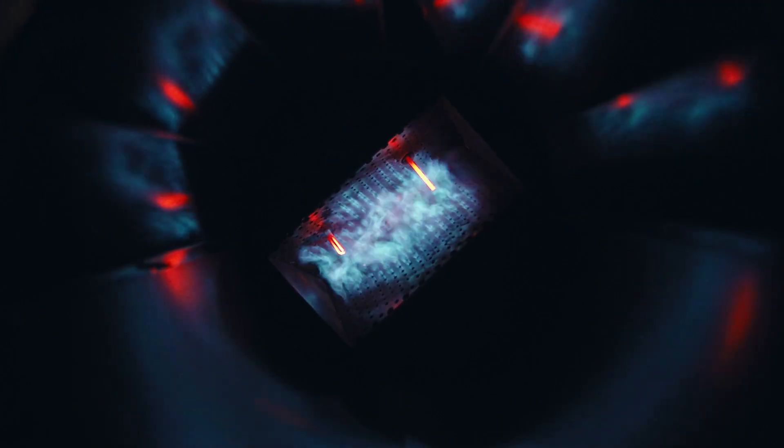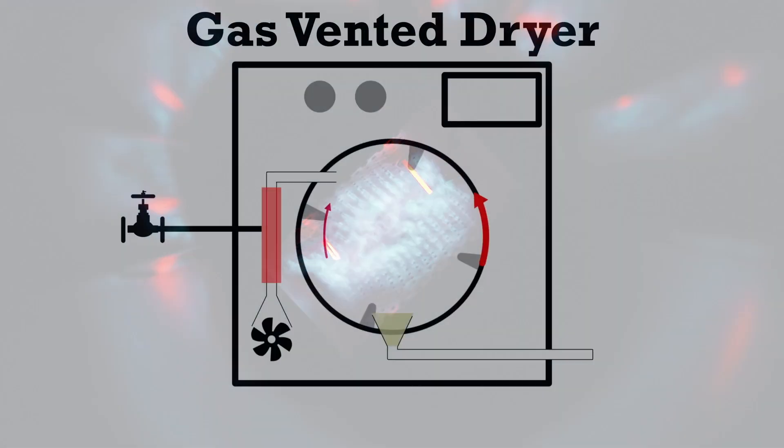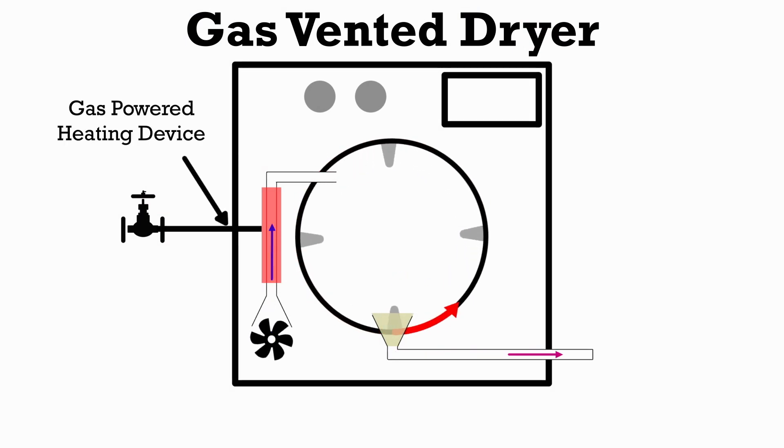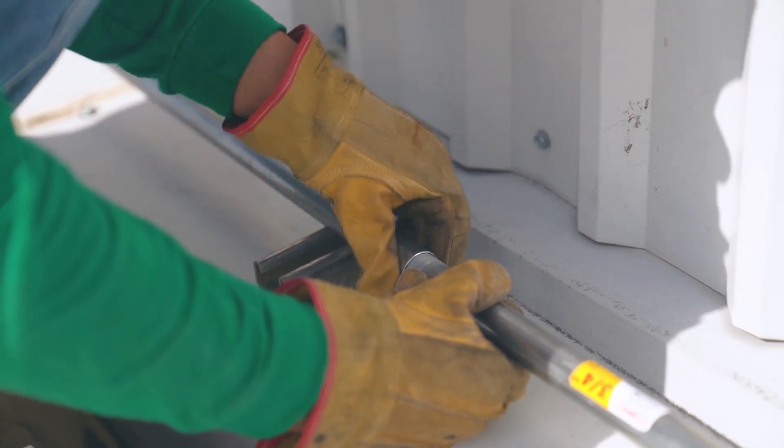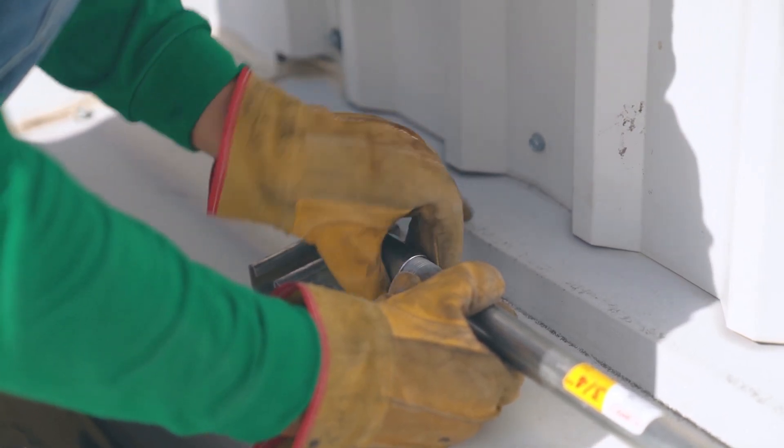Gas dryers are usually cheaper to run than electric dryers and they can dry the load quicker because they can get hotter. But they only make sense if you have access to gas piping close to the dryer location, as installing new piping can be very costly.